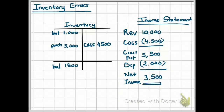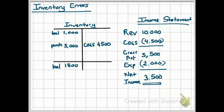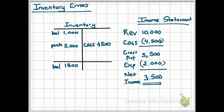Let's take a look at this example. In your inventory account here, there's a beginning balance of $1,000. We had purchases of $5,000. Cost of goods sold was $4,500, and our ending inventory is $1,500. You know that beginning balance plus purchases, which is $6,000, is equal to cost of goods sold plus ending balance, which is also $6,000.